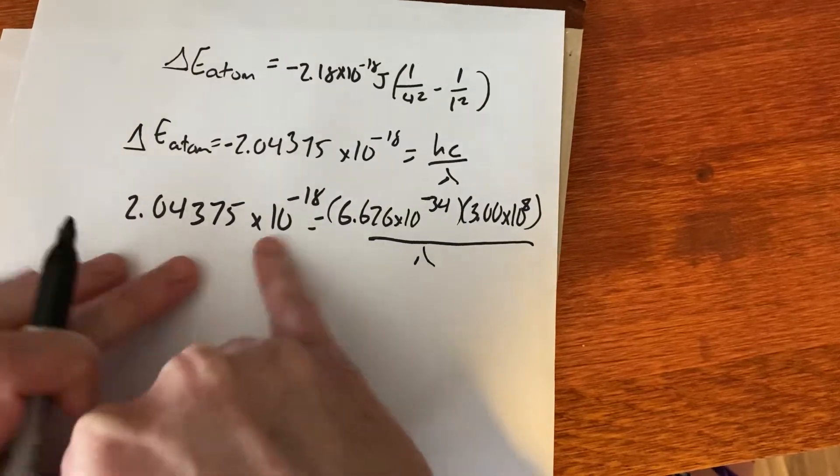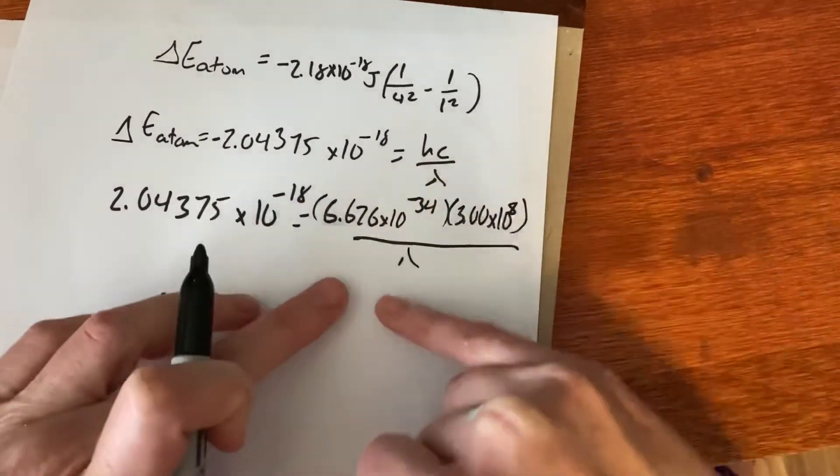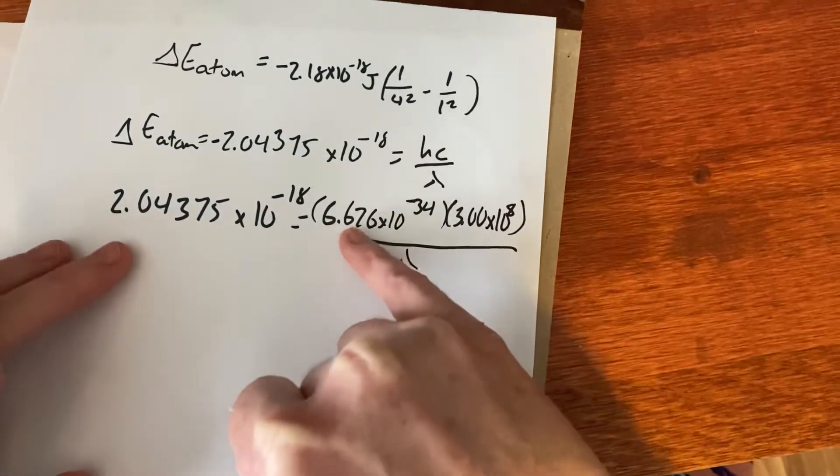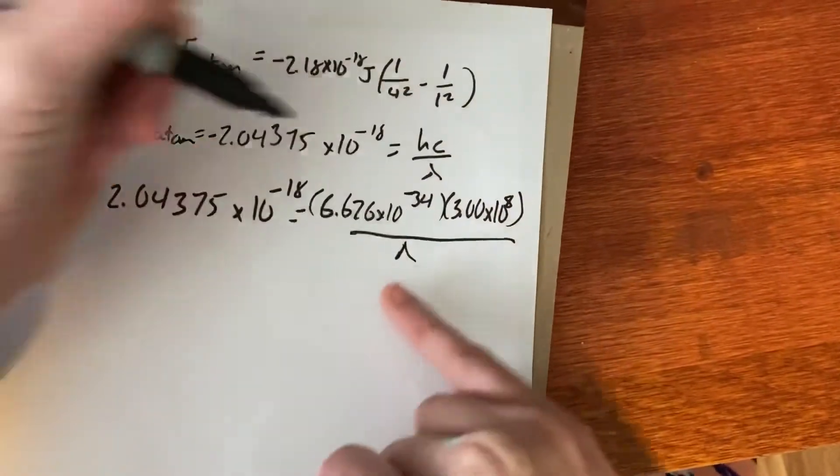So 2.04375 times 10 to the negative 18 equals H C over lambda. So hopefully you have 6.626 times 10 to the negative 34 times 3 times 10 to the eighth. And then we put that all over lambda.